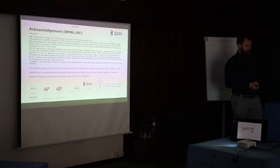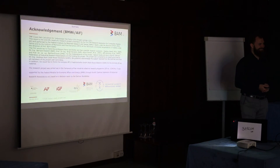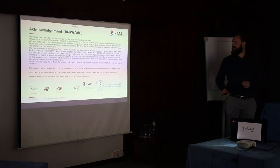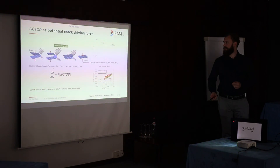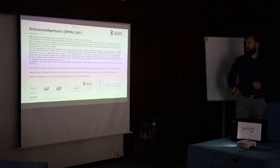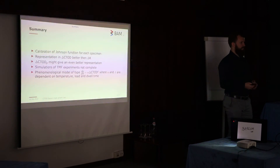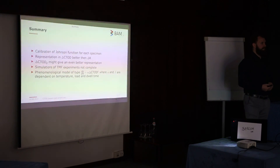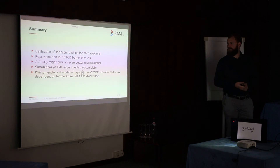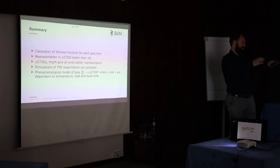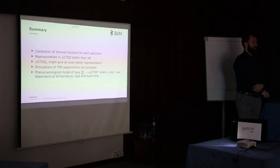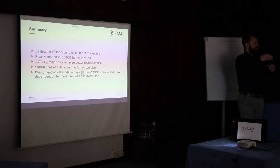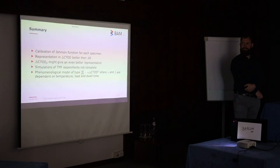Question about the potential drop measurement in the TMF experiment: when the temperature changes, so does the electrical resistance of the material — how is this accounted for? Answer: we choose a specific point throughout the cycle — specifically the highest potential reading within one cycle — and since we use a potential ratio always read at the same temperature point in the cycle, the temperature effect is mitigated. Clarification: so you measure throughout the whole cycle but assign readings to the highest temperature point. Exactly, yes.